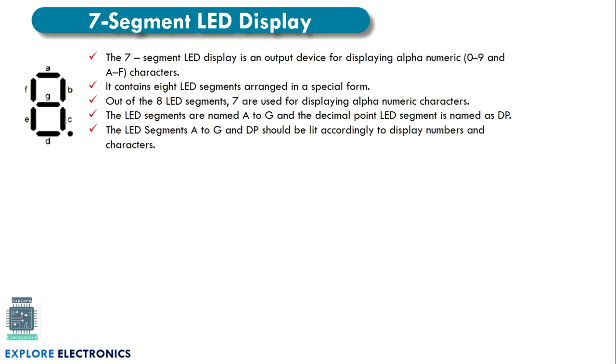Next is the 7 segment LED display. This 7 segment LED display uses LEDs — there are 7 LEDs labeled A, B, C, D, E, F, G to display a number. There is also an 8th LED to display a decimal point, making it an 8 LED device. We call it a 7 segment display because to display a number we use 7 LEDs or 7 segments.